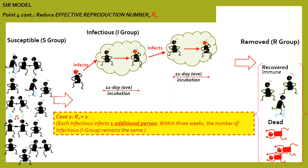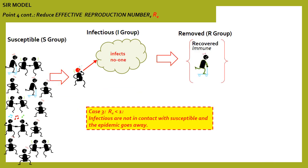On the other hand, if the R value is 1, the size of the infectious group remains the same after three weeks. What we want is an R number below 1, which means the epidemic is on its way out of the community.